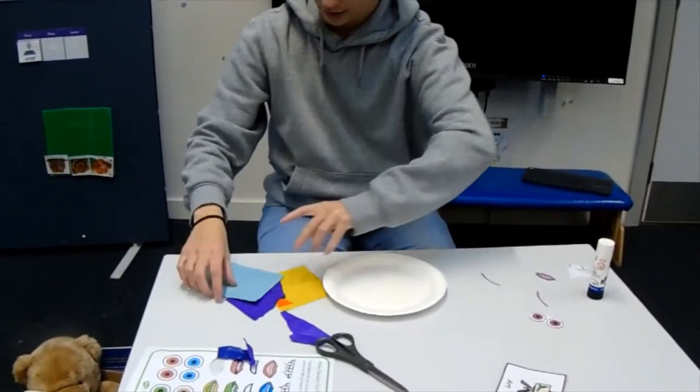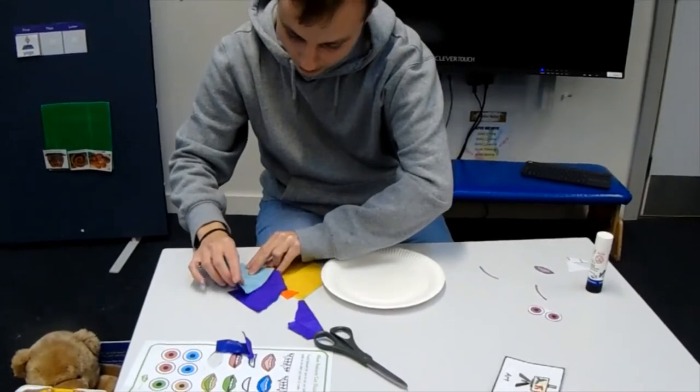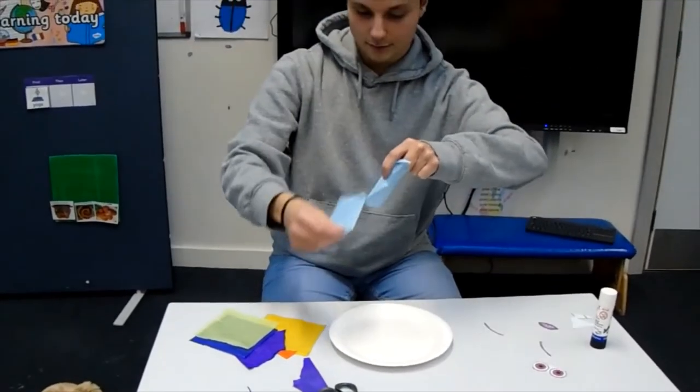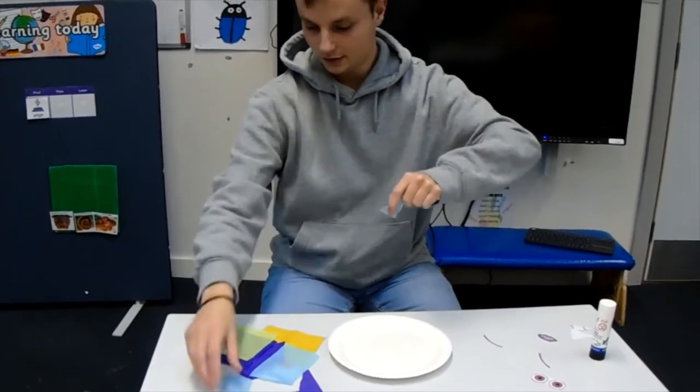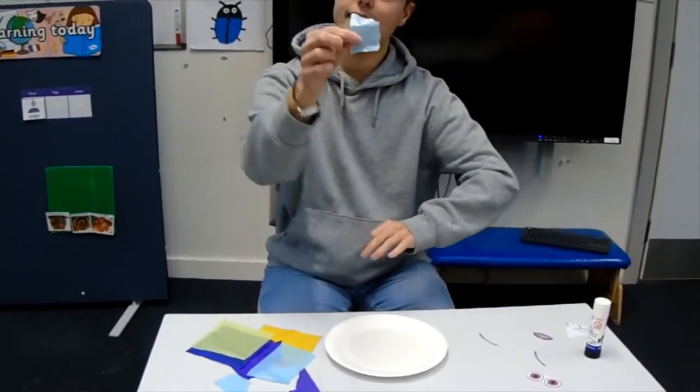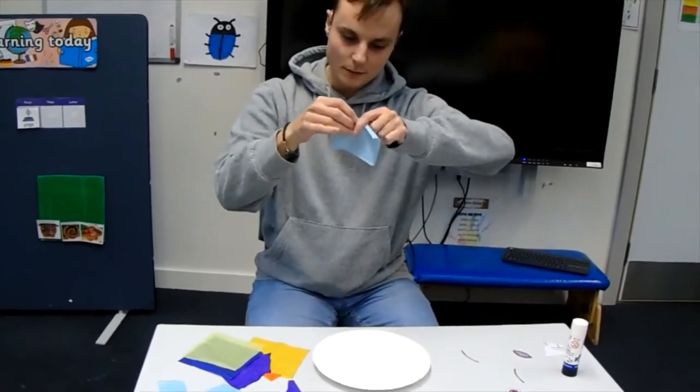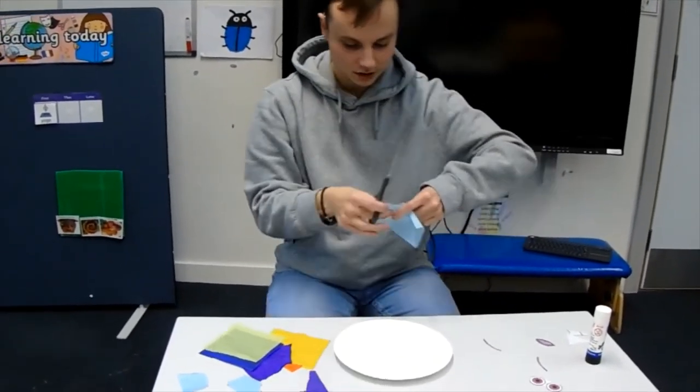Some purple and some blue paper as well. We're going to rip that up into different shapes. I've got a square here. I'm going to see if I can make a circle out of this one. It might be a bit tricky. I might use my scissors to make a circle.